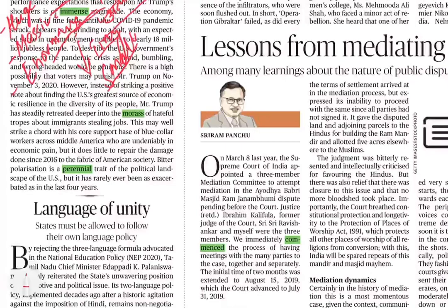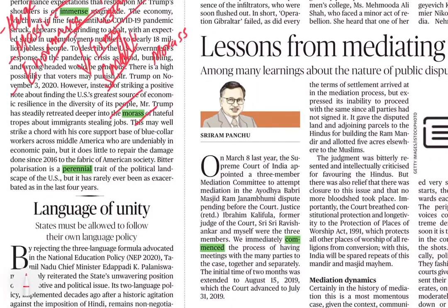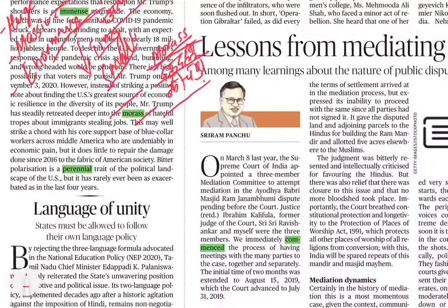Next word is 'morass' — M-O-R-A-double-S. Morass का Hindi मतलब होता है दलदल या कीचड़। Literal meaning: किसी area में अगर कोई particular area काफी muddy या कीचड़ वाला है, उस area को morass बोलते हैं। Second meaning: किसी भी given situation में जो confusing या complicated situation होती है — जिसे easily solve नहीं किया जा सकता — उस sense में भी morass word का use करते हैं।